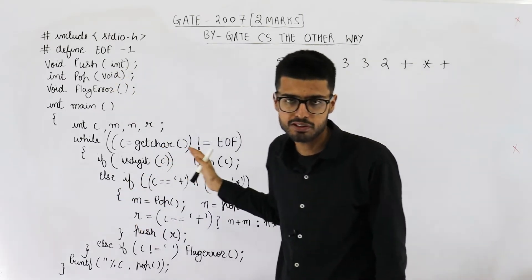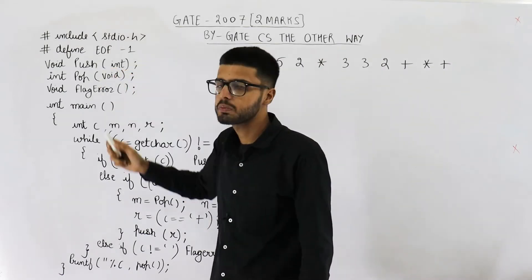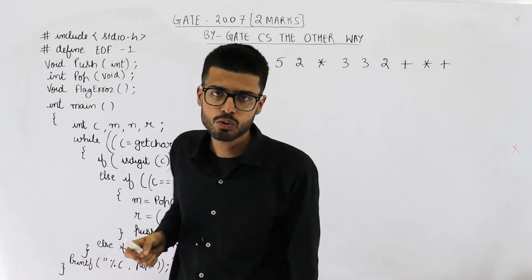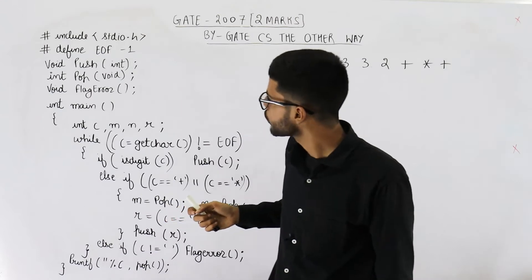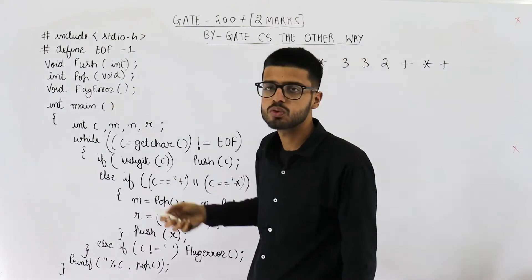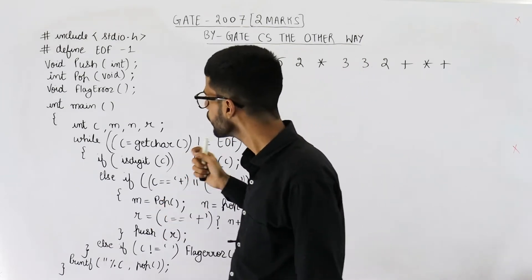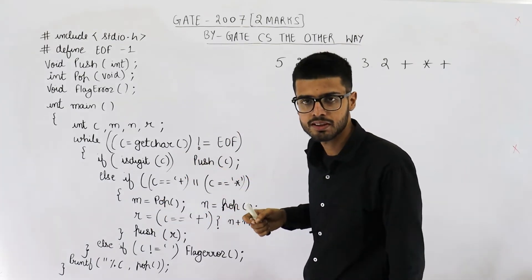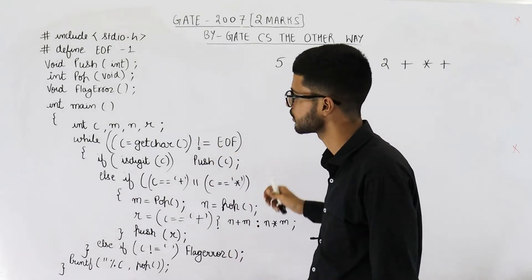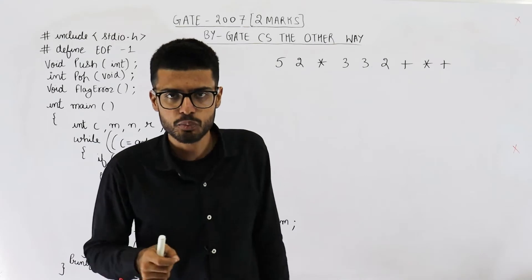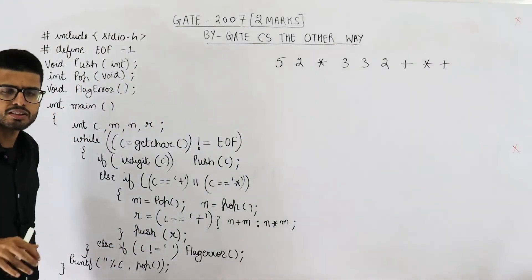I haven't copied those comments because the function names make it clear. Push is used to push some element onto the stack. Similarly, pop is used to pop an element. And the last one, flagError, is used to flag some error or print an error message on the screen. You can also ignore that the implementation of the stack is not shown in the program. There are a few ambiguities in this program, so just ignore such small things.